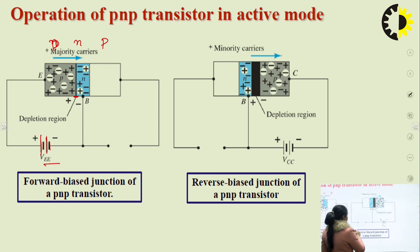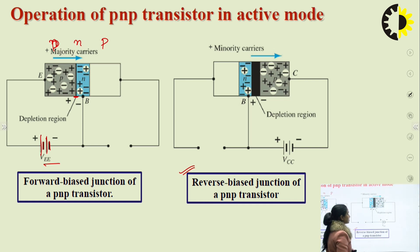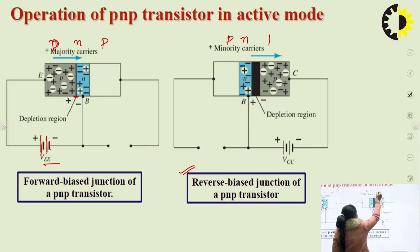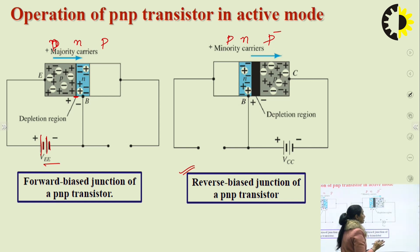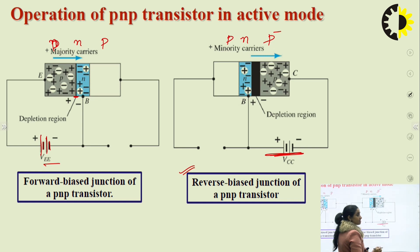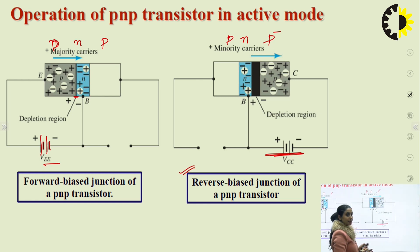For the reverse biased collector-base junction of the PNP transistor: the junction is reverse biased when the negative terminal of the battery is connected to the P-side. The battery applied here is represented as VCC. VEE is applied in a way that it creates forward bias, and VCC is applied to create reverse bias. This is when the transistor is in active region.